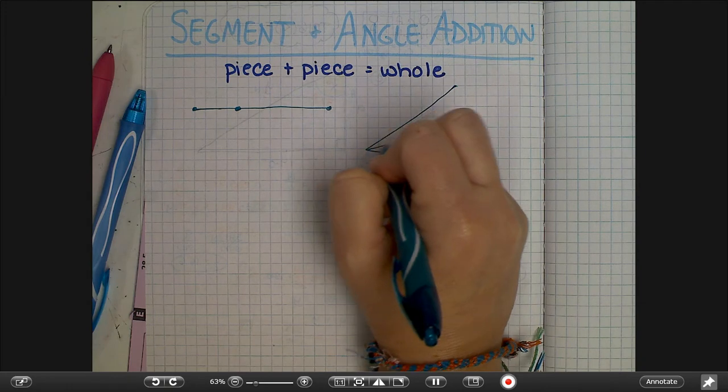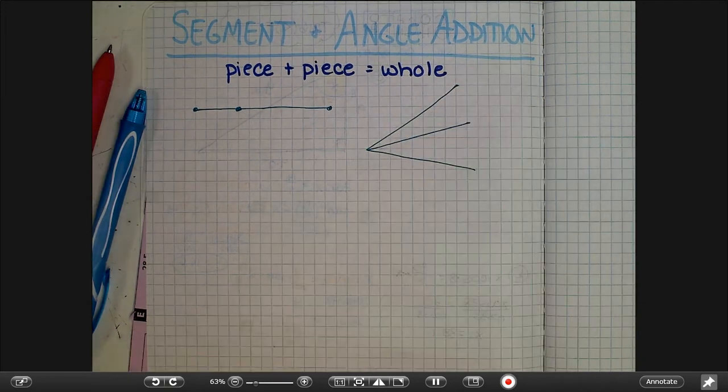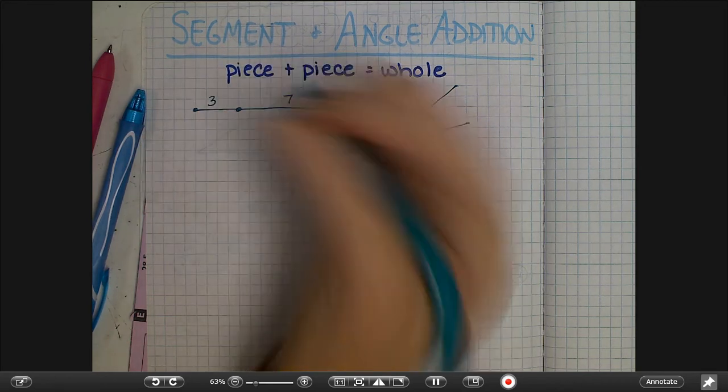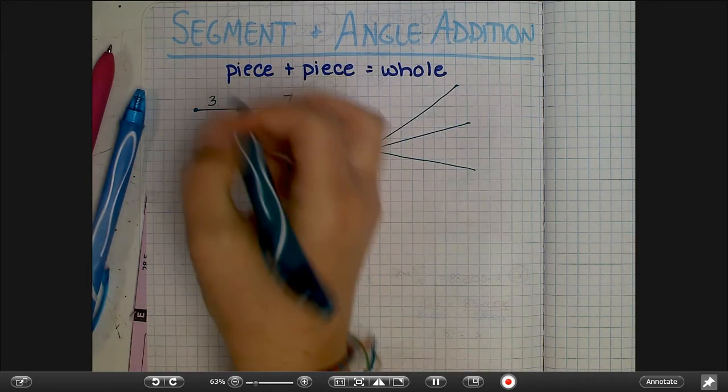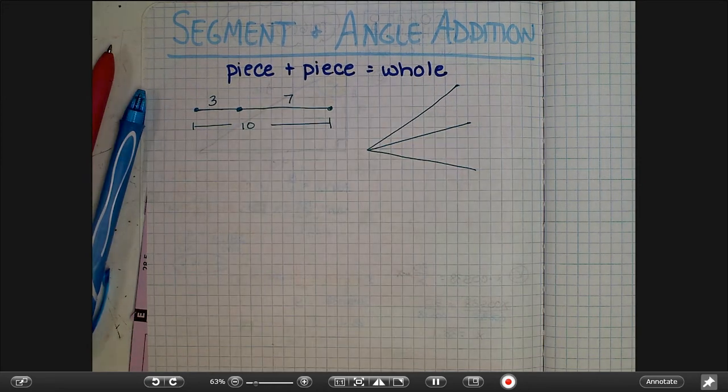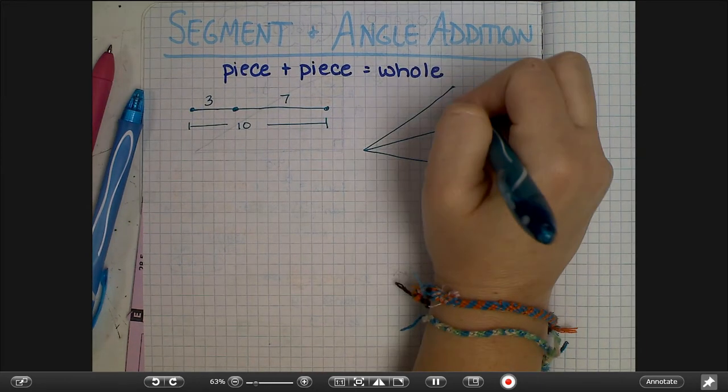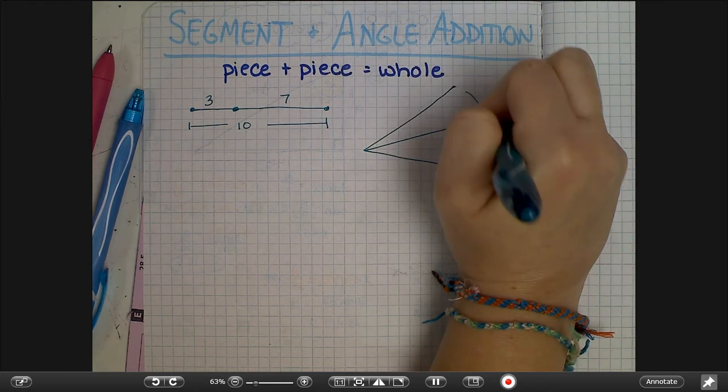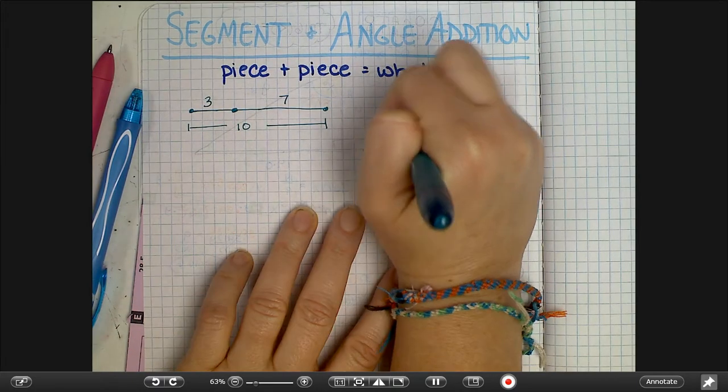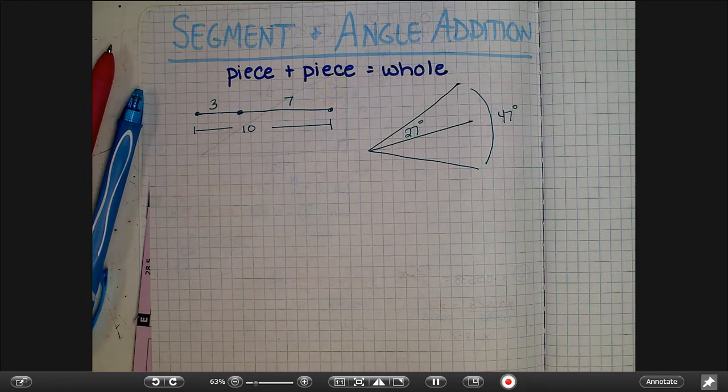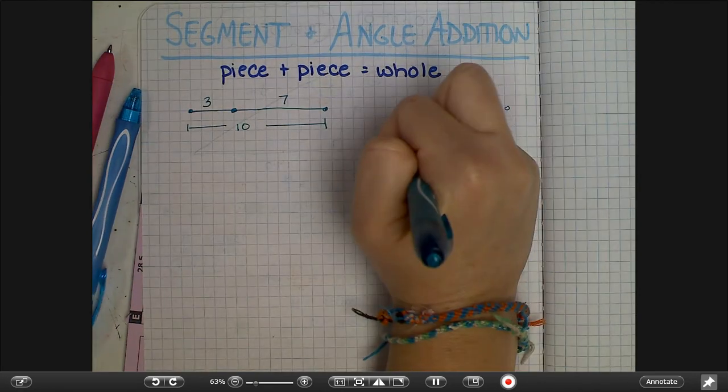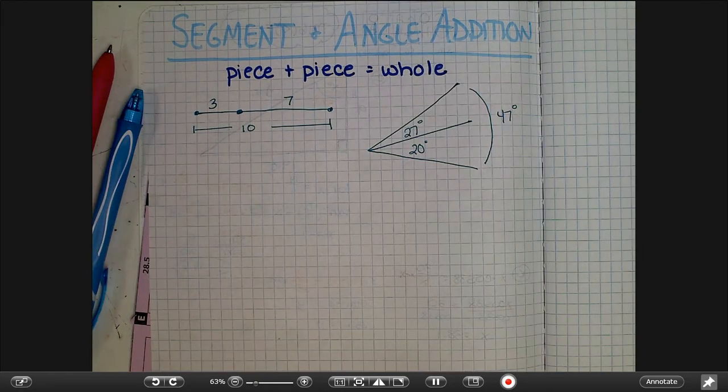In its simplest form it would be something like this: if you add those pieces together you figure out how big the whole thing is, and that comes naturally to most people. Let's say I said this whole angle was 47 degrees and I told you this one was 27. I'm sure even before I finish this sentence you already know how many degrees this one is: 20.